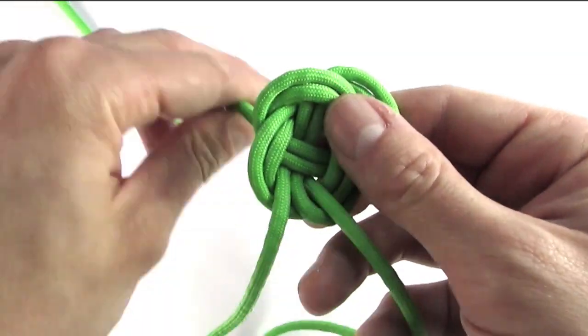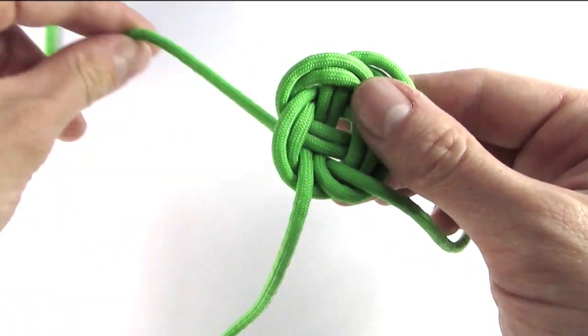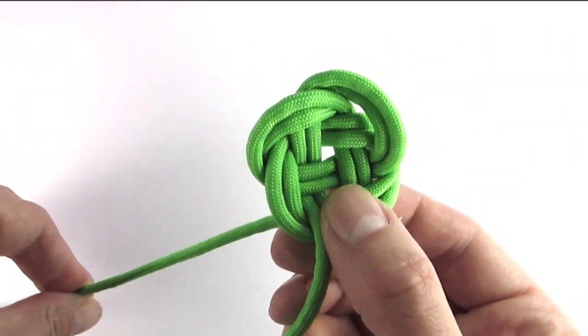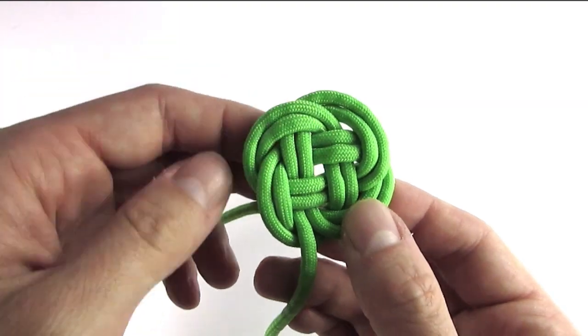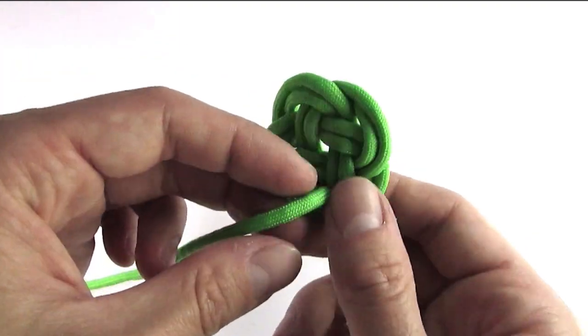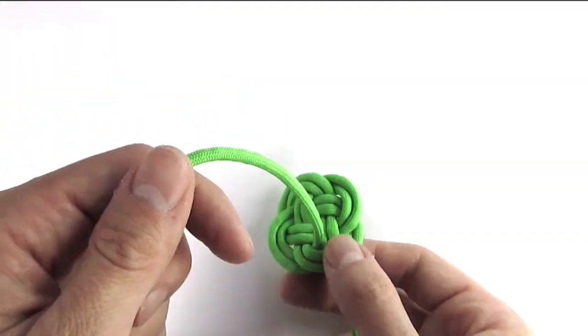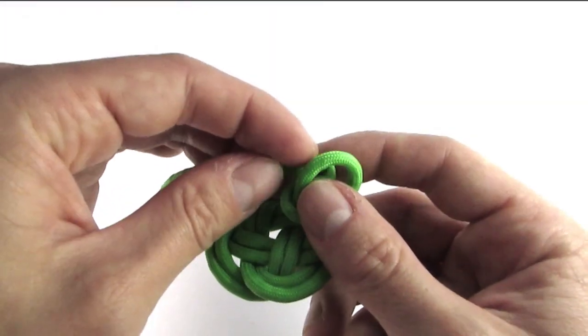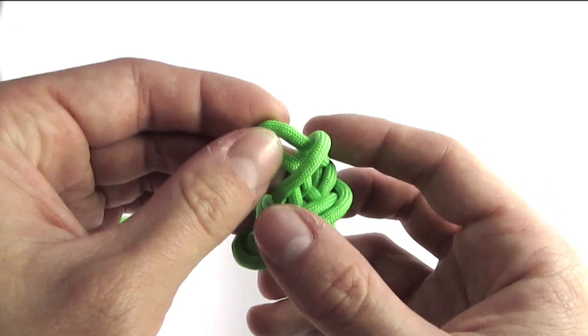At this point we could begin tripling, but instead we're going through to the other side to finish this knot. Now we're going to make a half hitch here, which will serve as the core for our knot.